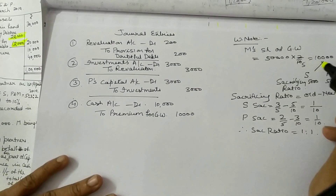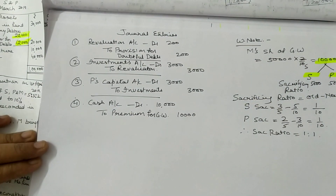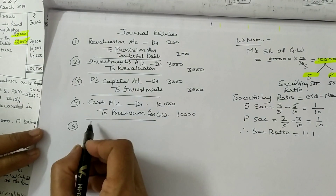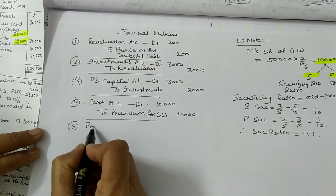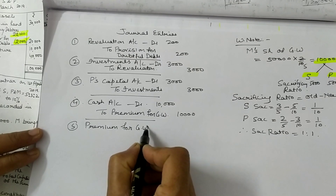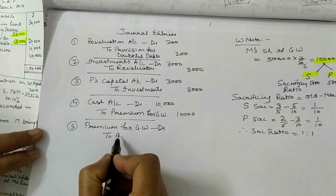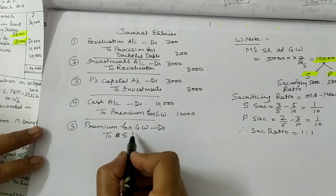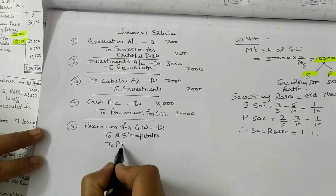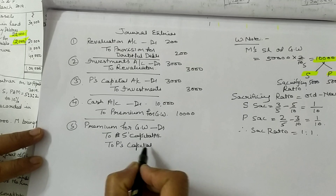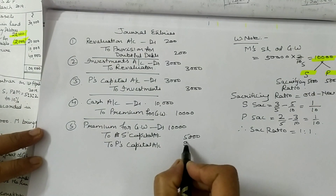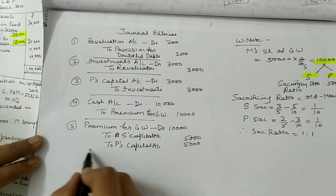This 10,000 premium is divided among old partners in sacrificing ratio 1 is to 1, so 5,000 each. The next entry: Premium for Goodwill Account debited to S's Capital Account and to P's Capital Account, 5,000 and 5,000, since the sacrificing ratio is 1 is to 1. Narration: premium for goodwill brought in cash by M, now divided among old partners in sacrificing ratio.